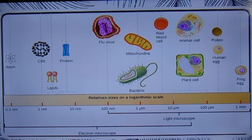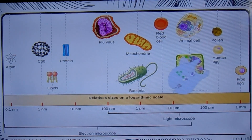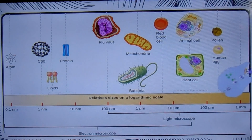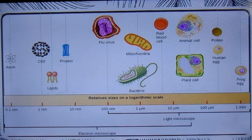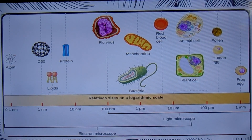A neutrophil or a macrophage in the body of an animal, by contrast, crawls through tissues, constantly pouring itself into new shapes as it searches for and engulfs debris, foreign microorganisms, and dead or dying cells.